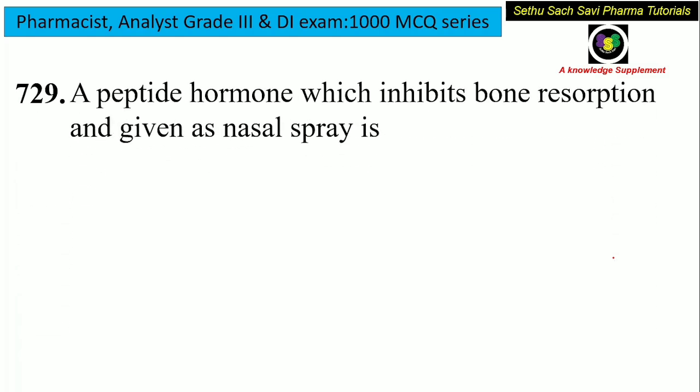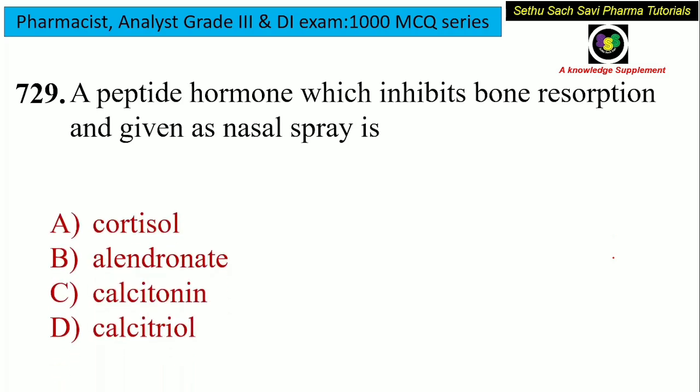A peptide hormone which inhibits bone resorption and is given as a nasal spray is — is it cortisol, alendronate, calcitonin or calcitriol?